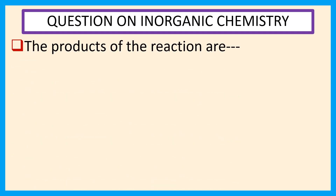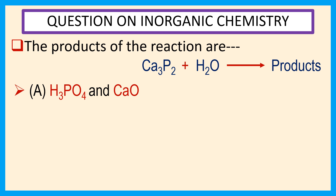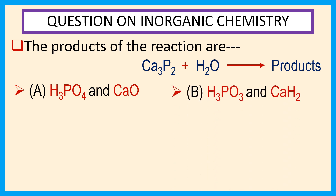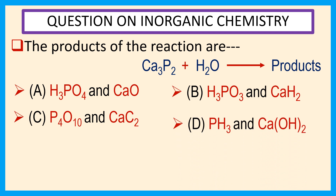The products of the reaction Ca3P2 plus H2O. The choices are: A, H3PO4 and CaO; B, H3PO3 and CaH2; C, P4O10 and CaC2; D, PH3 and Ca(OH)2.